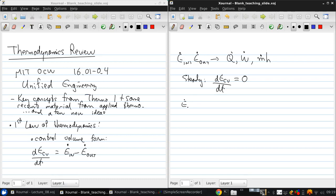So we can write E dot in like this: mass flow in times enthalpy in, plus heat flux in, plus power in. And similarly for the energy out: m dot H out, plus Q dot out, plus W dot out.